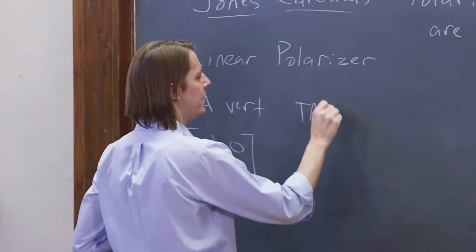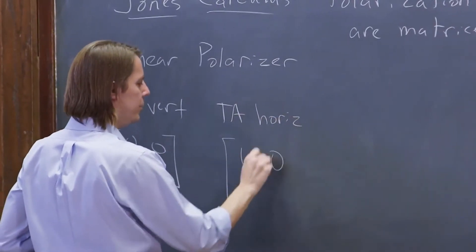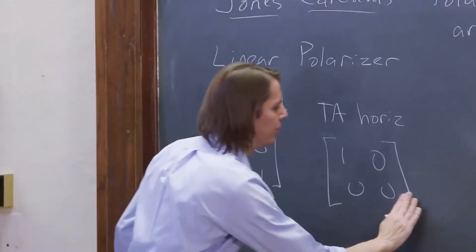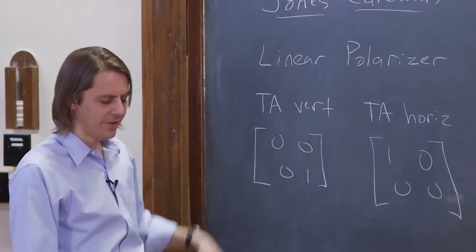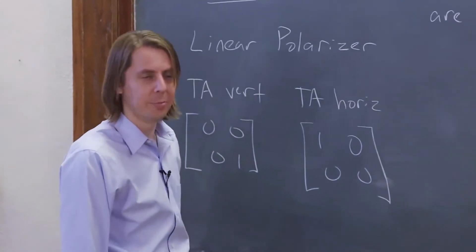If the transmission axis is horizontal, then it's 1, 0, 0, 0. In terms of Jones Calculus, you look at that and quickly know that it's a polarizer.